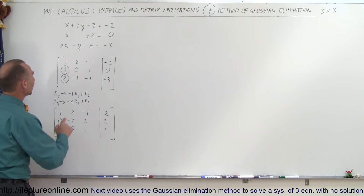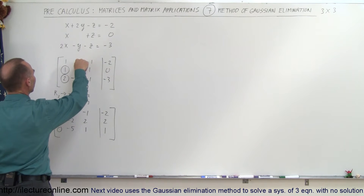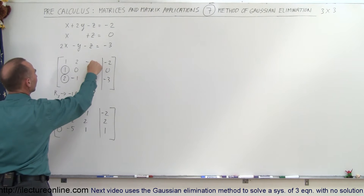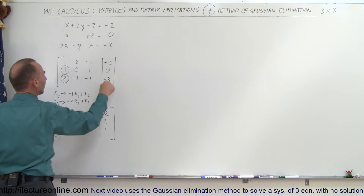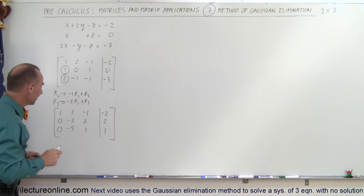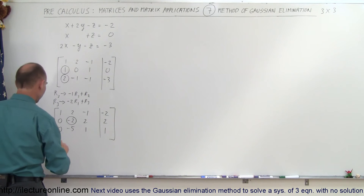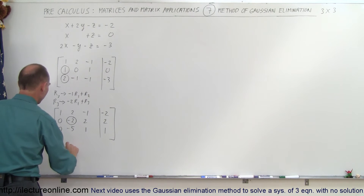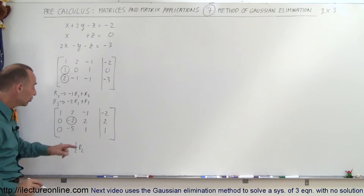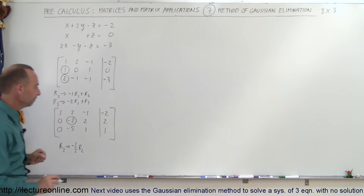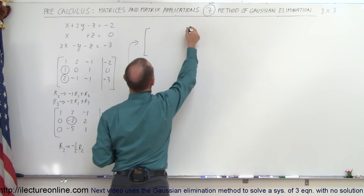Quick check: negative 2 times the first column gives 0; negative 4 gives negative 5; positive 2 gives positive 1; and positive 4 added to negative 3 gives positive 1. That's good. Next, we want to turn the leading entry of the second row into a positive 1. The second row becomes negative one-half times the second row — in other words, divide the whole row by negative 2 — and this becomes a positive 1.